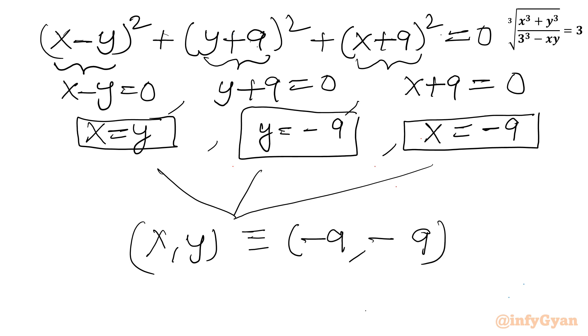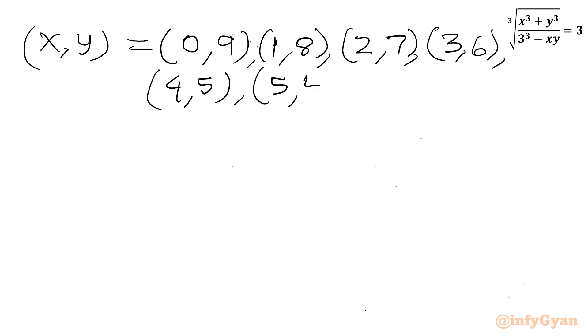Let us write our final answer in ordered pair. So I will be writing here x comma y. It would be equal to 0, 9 first value, 1, 8, 2, 7, 3, 6. Then we can write 4, 5. Then we will write 5, 4. Then 6, 3. Then 7, 2. Then 8, 1. Then 9, 0.